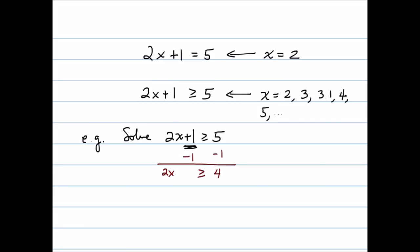This operation does not change the direction of the inequality. The next operation is to undo the multiplication on the x. On the left-hand side, I have 2 times x; the opposite operation is division. So to get rid of the 2, I divide both sides by 2. This leaves me simply x on the left and the number 2 on the right. Again, this operation does not change the direction of the inequality. The solution set is all x values such that x is greater than or equal to 2. In interval notation, this is the closed bracket 2 to infinity with an open bracket. Graphically, this corresponds to shading everything to the right of the solid point 2 on the number line.